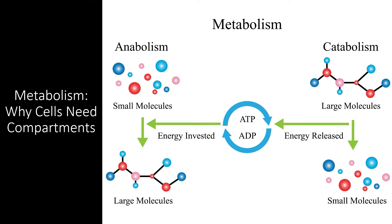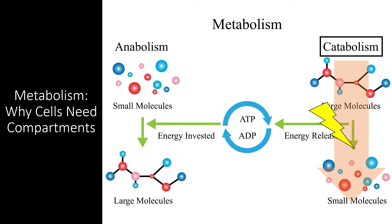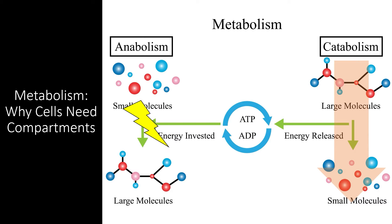An organism's metabolism is formed from two separate components: catabolism and anabolism. Catabolic reactions break down large macromolecules into smaller molecules and release energy in the process. Anabolic reactions use that energy to create larger biomolecules. To understand why cells need compartments, you need to understand why these two types of reactions cannot happen in the same physical space.